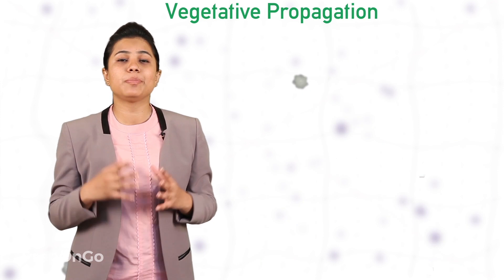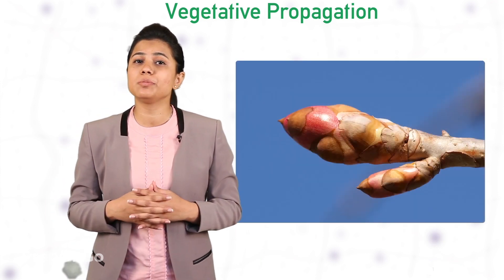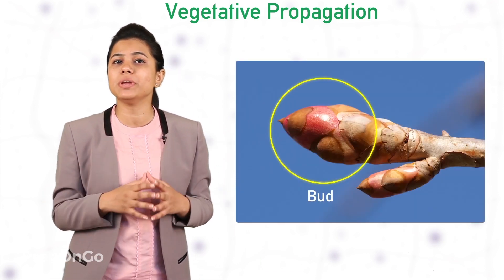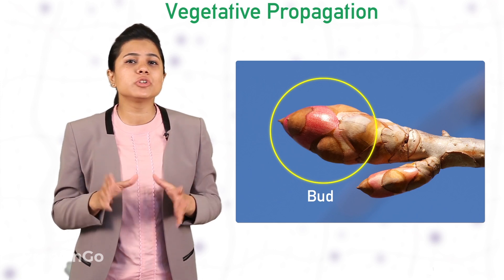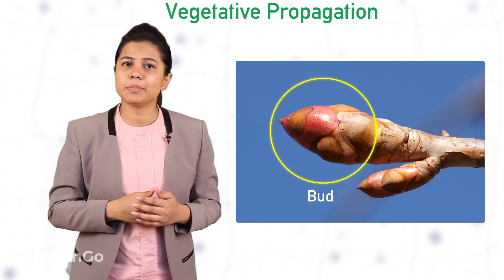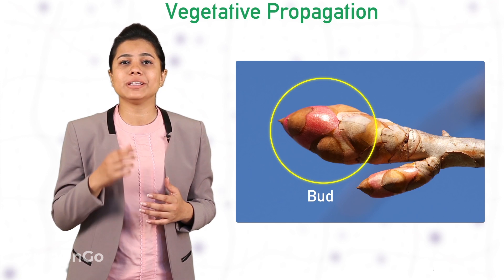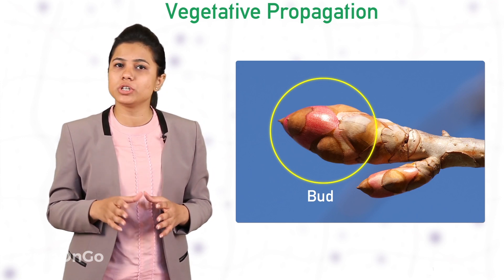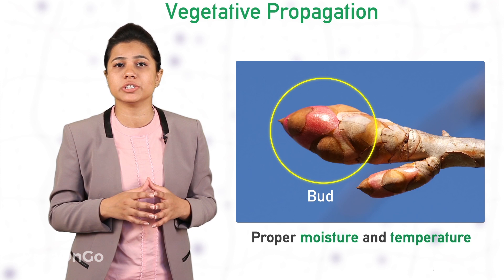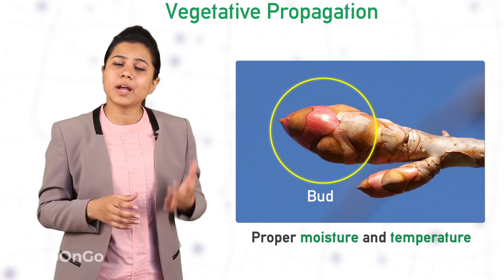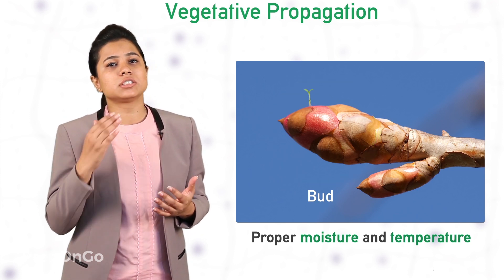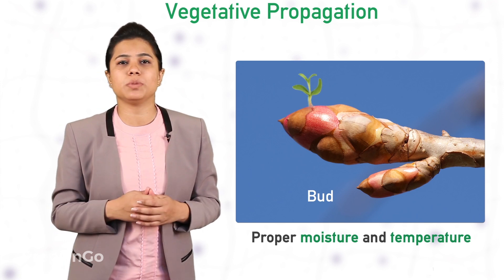Parts of the old plants contain certain buds which are normally in their dormant state, which means they are initially inactive. When these parts are provided with suitable conditions like proper warmth or proper moisture, the buds which were initially inactive start to grow and develop into a new plant.